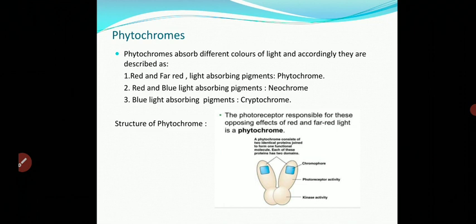The third type is the blue light absorbing pigment — cryptochrome. Photoperiodism in flowering plants also involves another photoreceptor known as cryptochrome, which mainly absorbs blue light and UV-A. Cryptochromes entrain the circadian clock to light. Both phytochrome and cryptochrome abundance rely on light, and the amount of cryptochrome changes depending on day length. Both are important for plants to determine day length and accordingly give a stimulus for flowering.